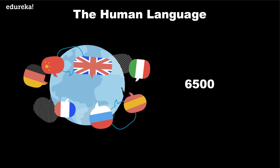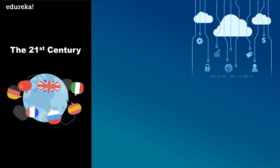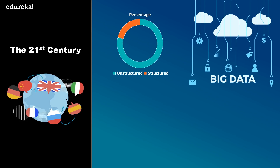The human language is a mystery with over 6500 languages worldwide. When a language contains words that are derived from another word as their use in speech changes, it is called an inflected language. Almost all languages have this feature and most of them are inflected languages. According to industry estimates, only 21% of the available data is present in structured form.